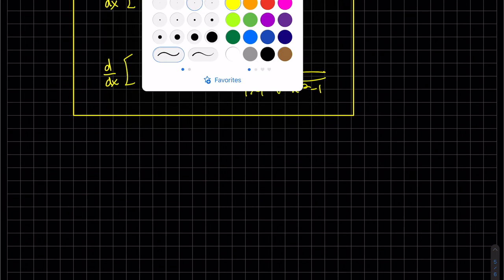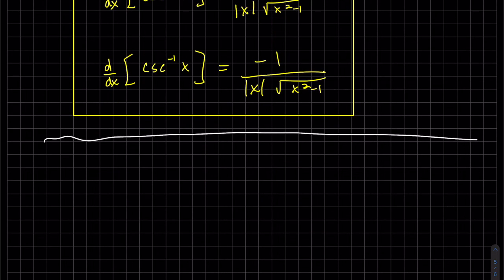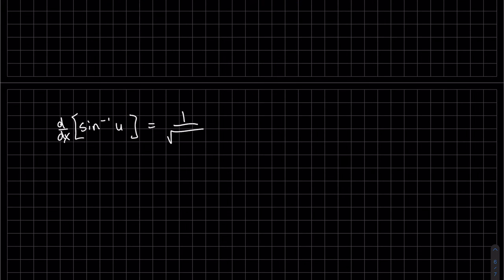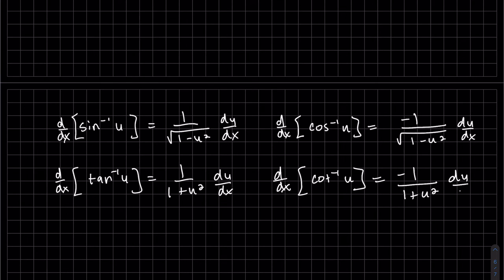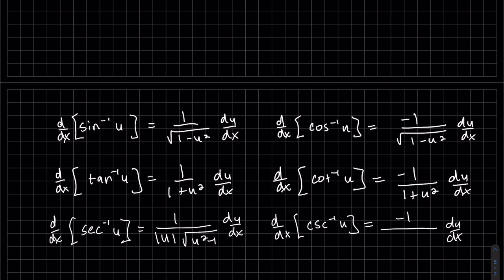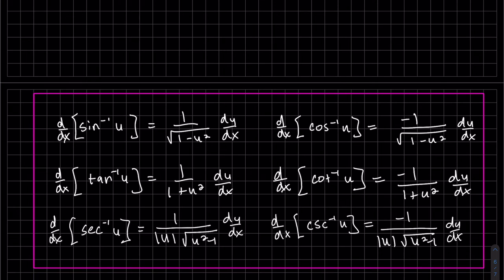So writing these formulas out, I'll use U now instead of X. I'll use the chain rule.